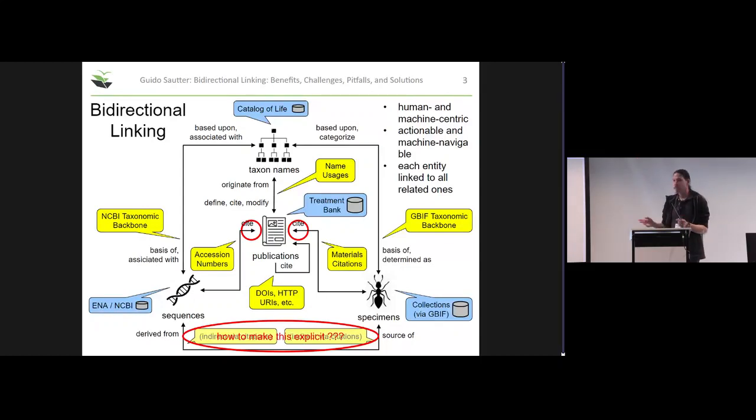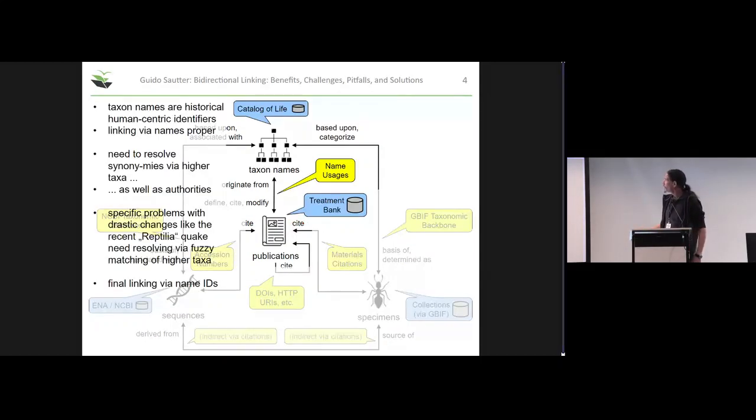There are a few little kinks to work out in these three departments which I'm going to go through individually. First, taxonomic names - they're maybe the household example and the easiest case because they're sort of historical identifiers themselves. The linking works via the names proper because they are as close to an identifier as it gets, at least historically.